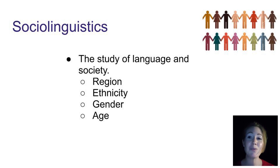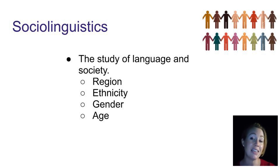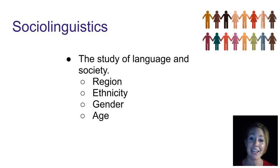In sociolinguistics, we look at how all of our language is encoded with societal influence. So how region — the city, the state, the country you grew up in — all influence the style of English you speak right now. So does your ethnicity, gender, and age, amongst many other variables. Sociolinguistics is the study of sociology alongside language.